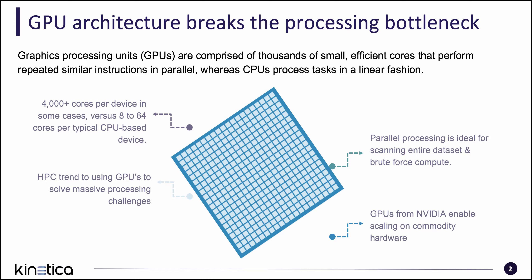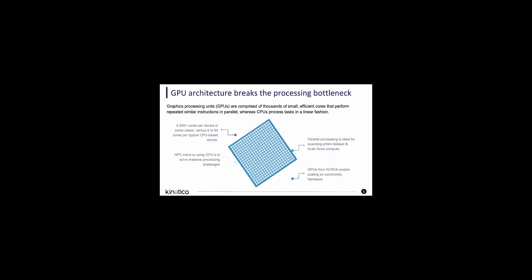Modern GPUs have thousands of cores versus a typical CPU which has 8 to 64. To sum it up, GPU Accelerated Computing alleviates the bottleneck left by traditional CPU-only architecture and enables faster analytics on a fraction of the hardware.